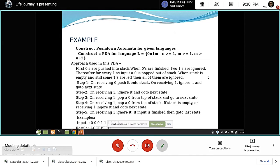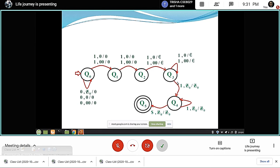Construct pushdown automata for given language. Construct PDA for language L where 0 to the power n and 1 to the power m, where n is greater than or equal to 1, m is greater than or equal to 1, m is greater than or equal to n plus 2. Approach used in this PDA is...